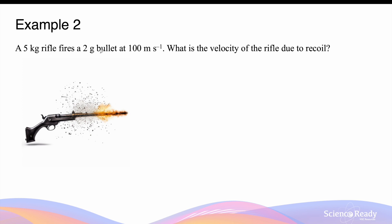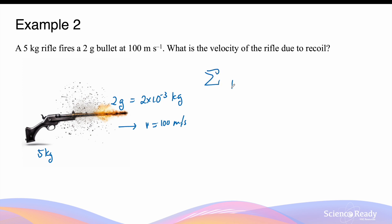A 5 kilogram rifle fires a 2 gram bullet at 100 meters per second. The rifle is 5 kilograms. The bullet that was fired is 2 grams, which is equal to 2 times 10 to the power of minus 3 kilograms. The bullet is traveling at 100 meters per second. What is the velocity of the rifle due to the recoil? Again, this is a closed system because there are no external forces acting on the rifle and the bullet. So we can apply the law of conservation of momentum, where the momentum before the event — before the rifle was fired — equals the momentum after it was fired. Before the rifle was fired, both the rifle and the bullet have no velocity, which means the momentum of the system is simply zero.